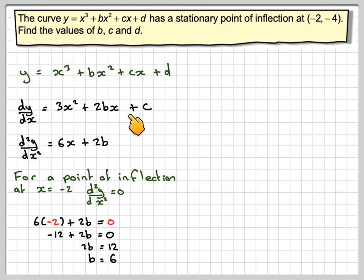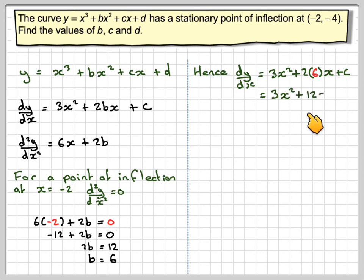So if we now write out the first derivative with the value of b in it, 3x squared plus 2 times 6x plus c, that gives 3x squared plus 12x plus c. At a stationary point of inflection, dy by dx will be equal to 0 as well.